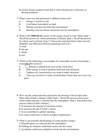Number 7. Which of the following is an example of a renewable resource becoming a non-renewable resource? A. Petroleum is drilled from rock on the ocean floor. B. Solar energy is used to produce both heat and electricity. C. Turbines are constructed to use wind to make electricity. D. Trees are cut down to make wood products faster than new trees can grow.